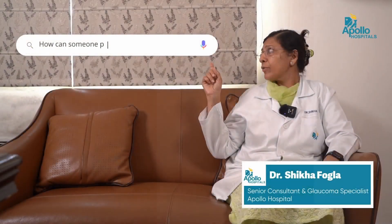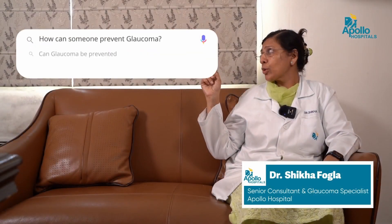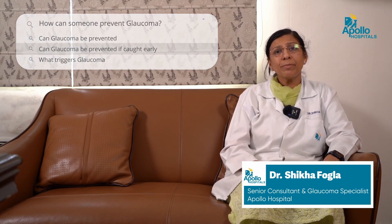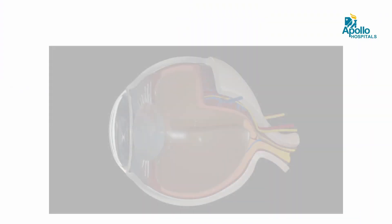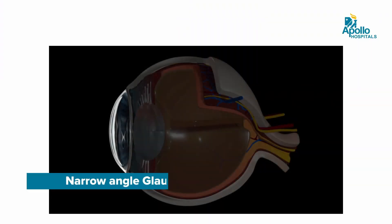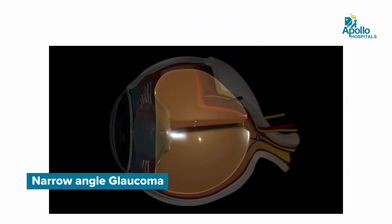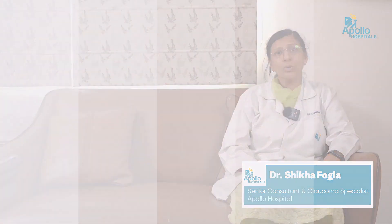How can someone prevent glaucoma? Glaucoma is a multifactorial condition and some of the contributing factors are not in our hands, but there is a variety called narrow angle glaucoma which, if picked up and treated on time, can prevent the development of glaucoma.